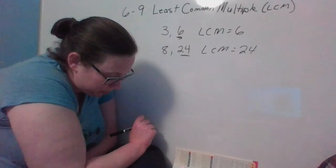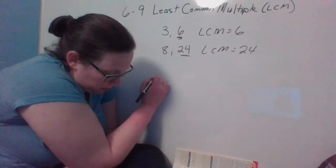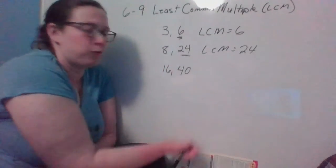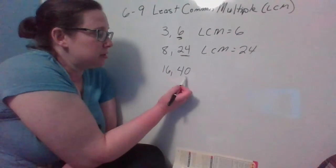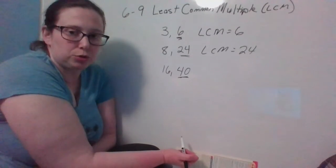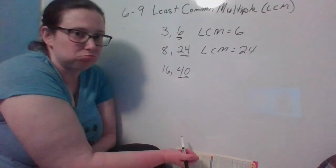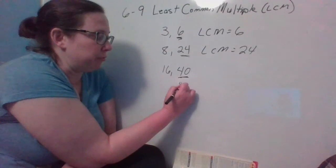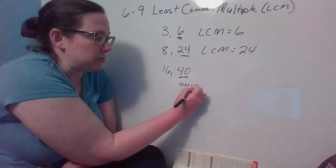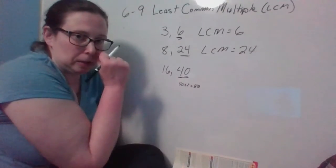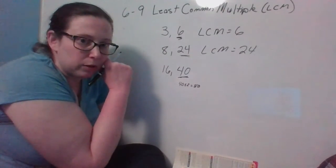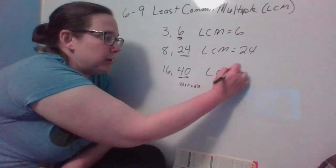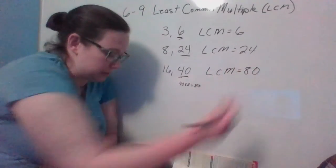Let's see if we can find one that doesn't work for. Okay, so 16 and 40. Does 16 go into 40 without a remainder? No, it doesn't. So then I'm going to say, all right, well 40 times 2 equals 80. Does 16 go into 80 without a remainder? Yeah, it does. So my LCM is 80.